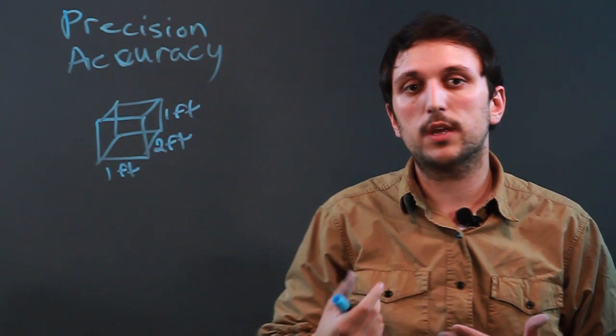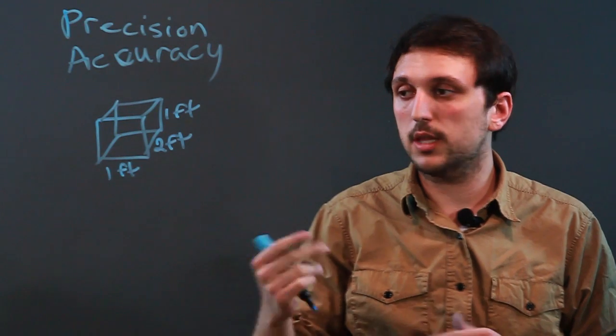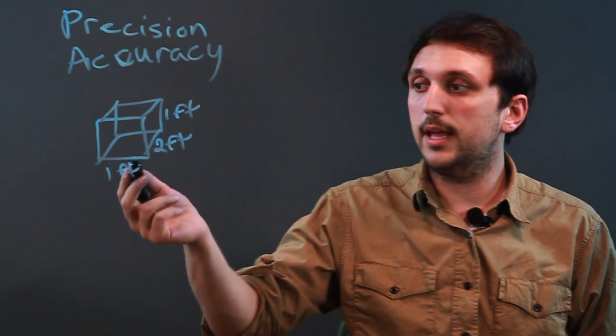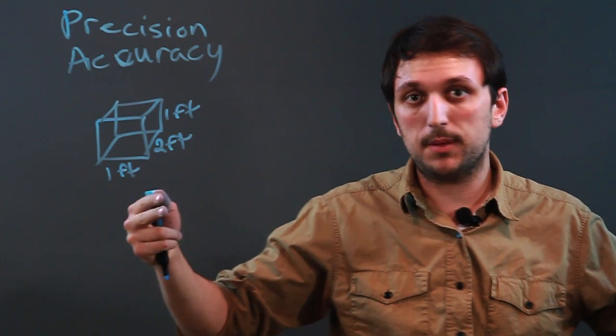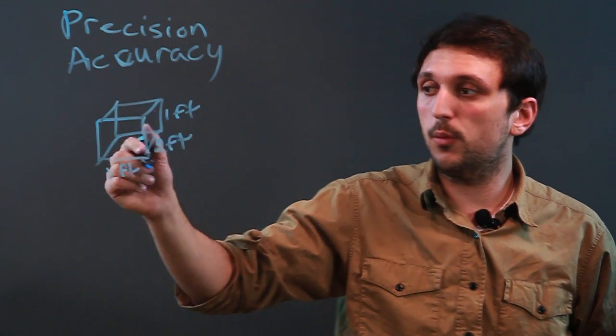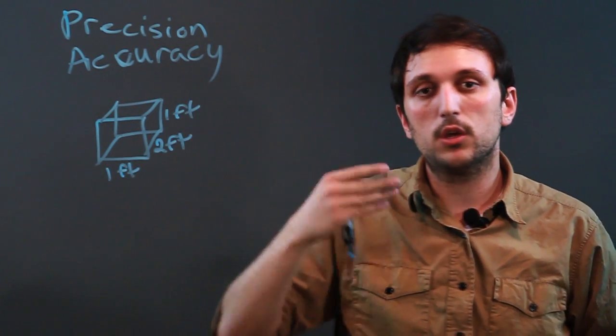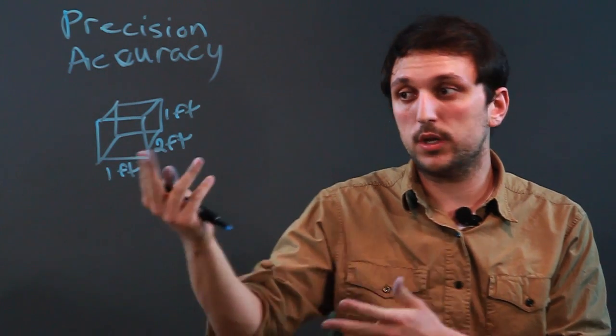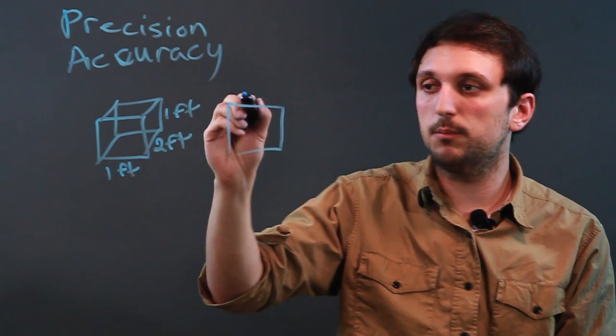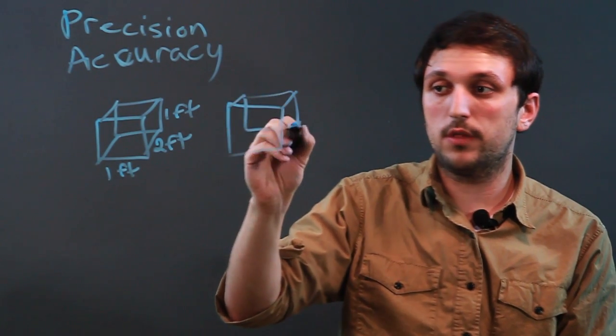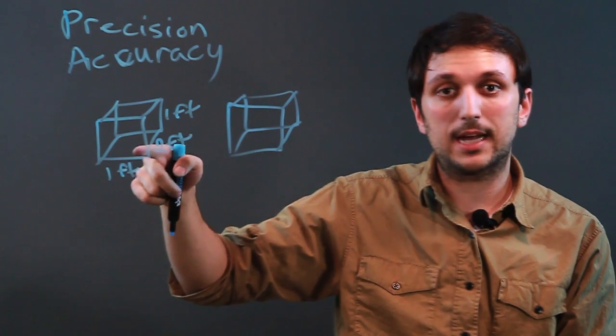So if you were to try to draw that box or construct that box on paper, and you actually made it on paper to be one foot by two foot by one foot, that involves accuracy. You're trying to replicate something real. So your drawing actually being close to this would be accuracy.